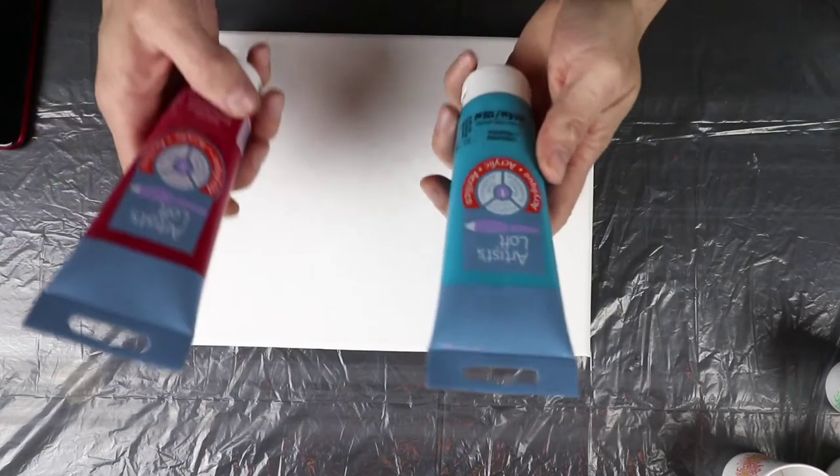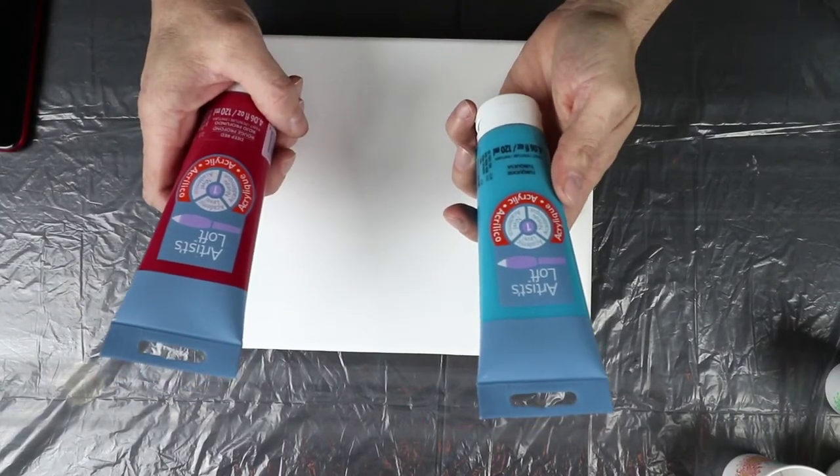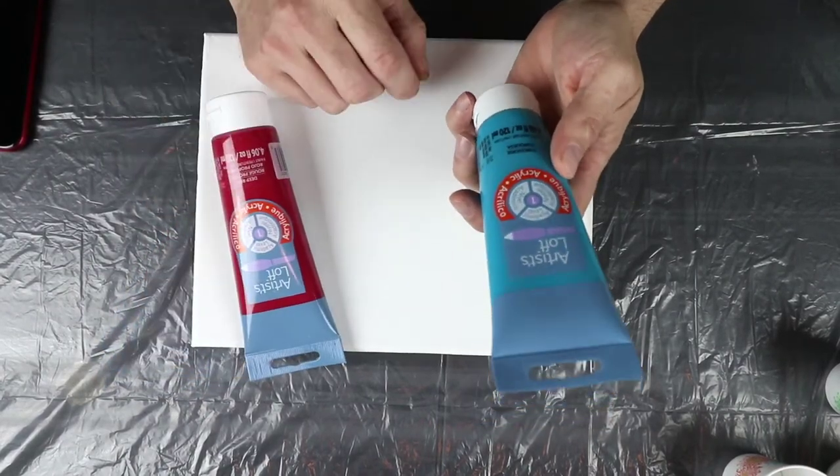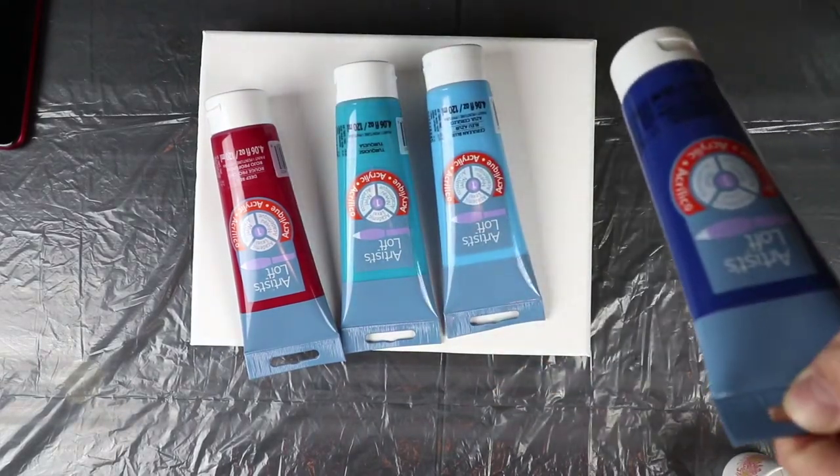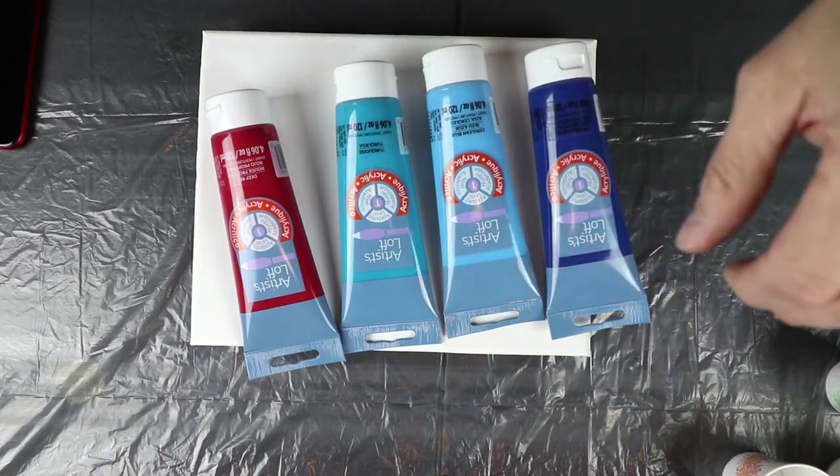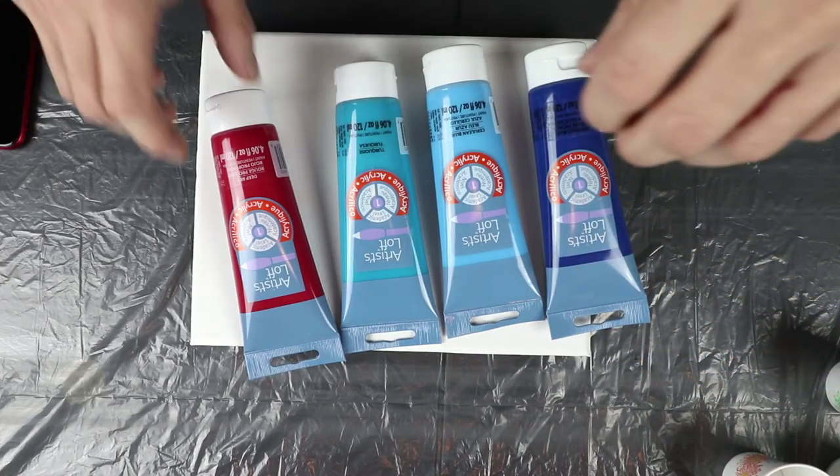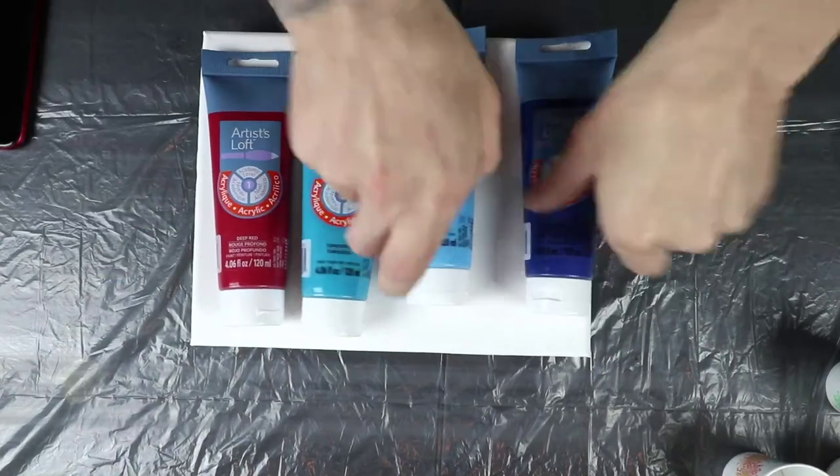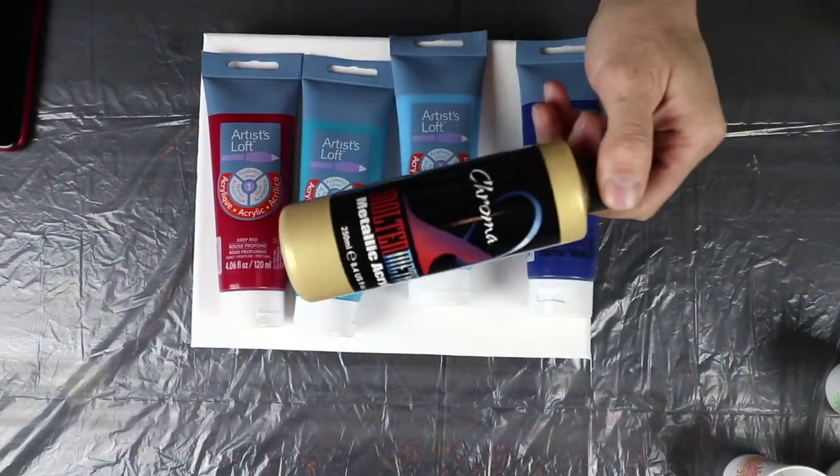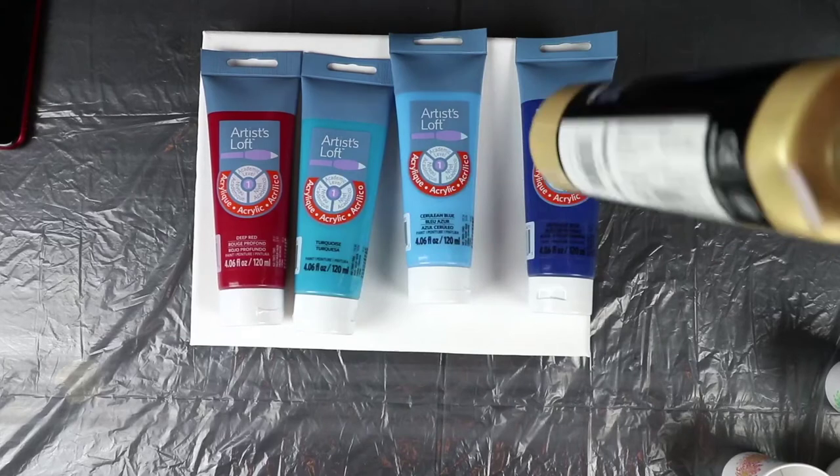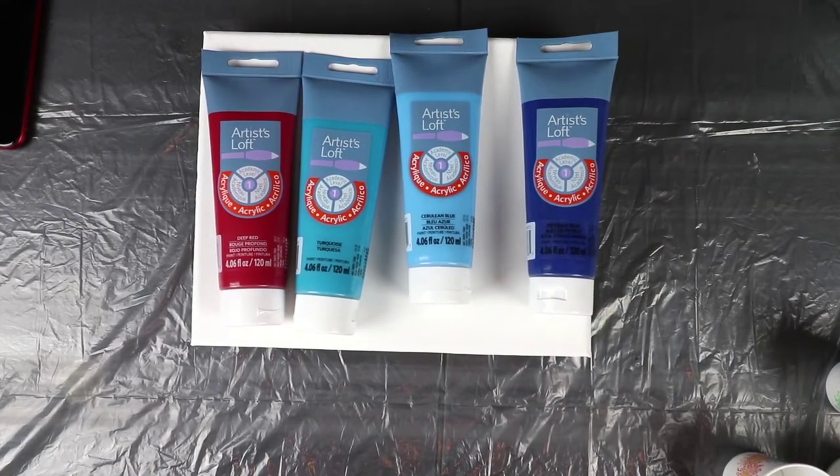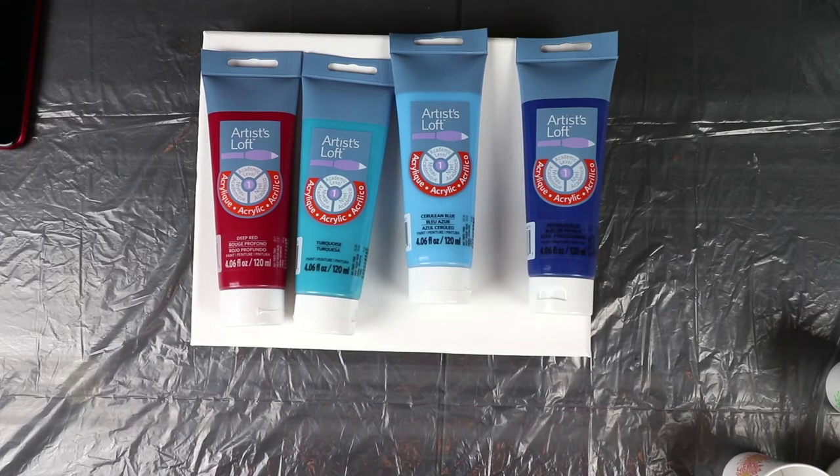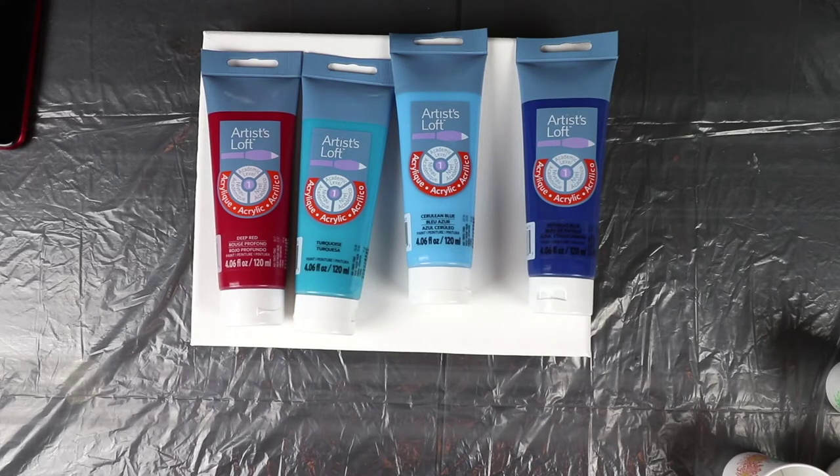Now, what we're going to be doing today is a flip cup. We're going to be using Deep Red Artist Loft, Turquoise by Artist Loft, Cerulean Blue, we're going to be using Phthalo Blue also. They're all upside down, there you go guys. And then, of course, because I'm absolutely addicted to metallics, we're going to be using this Chroma Dorado Gold. Hopefully the camera's going to stay good, Doris.